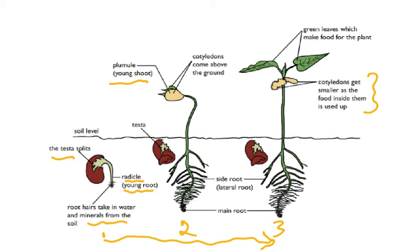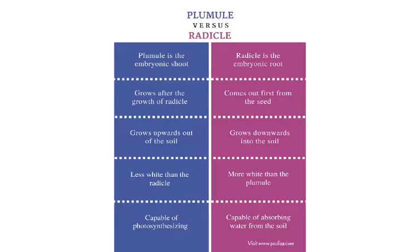There is a decrease in mass during early germination, but once the leaves develop to a sufficient surface area, photosynthesis will exceed respiration and then there will be an increase in mass. A brief comparison table contrasts the plumule and the radicle: the plumule is the embryonic shoot while the radicle is the embryonic root.